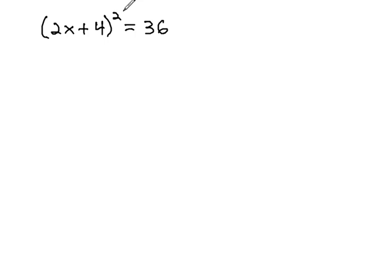We know we want to get rid of this exponent of 2, and the opposite of squaring something is to take a square root of both sides. As we do this, square and square root are inverses, so we're just left with 2x plus 4 equals the square root of 36, which is 6.